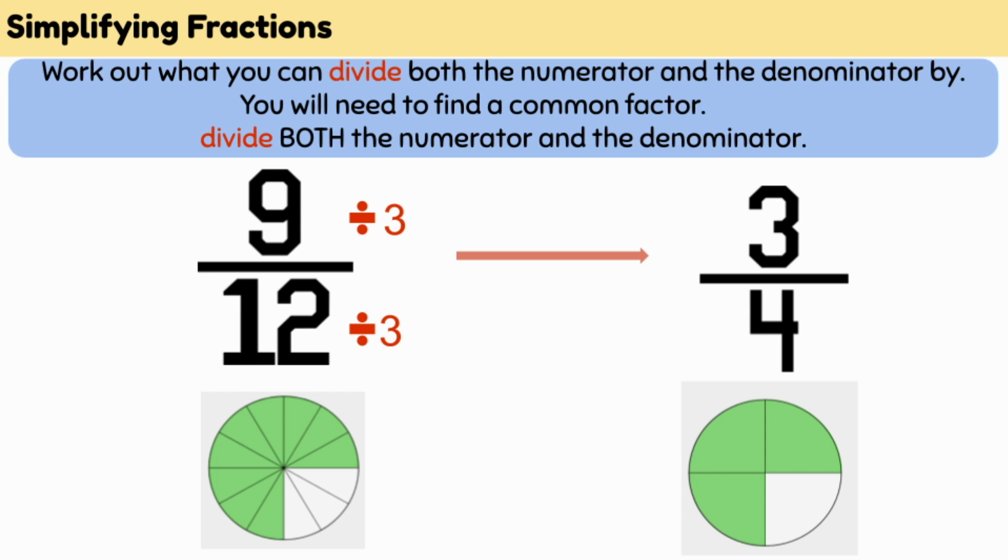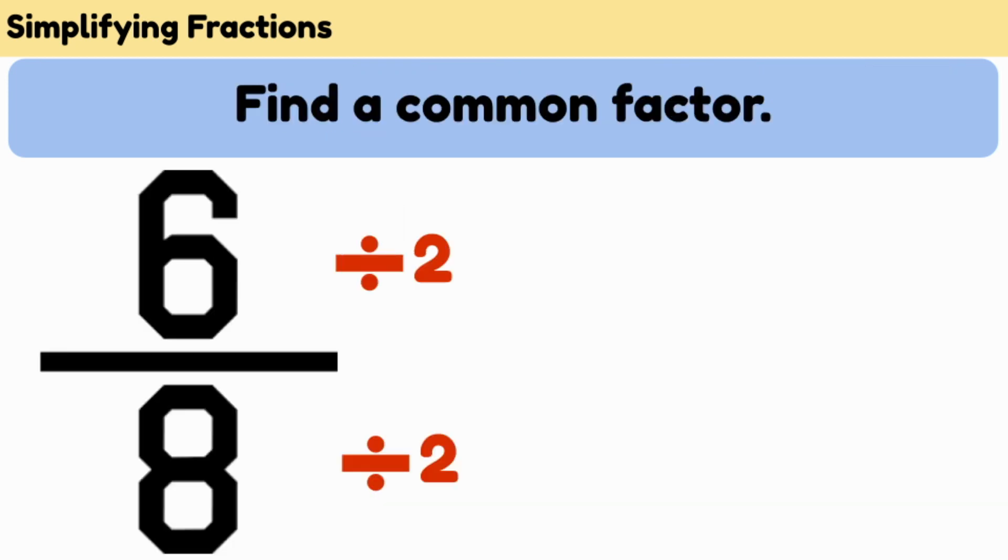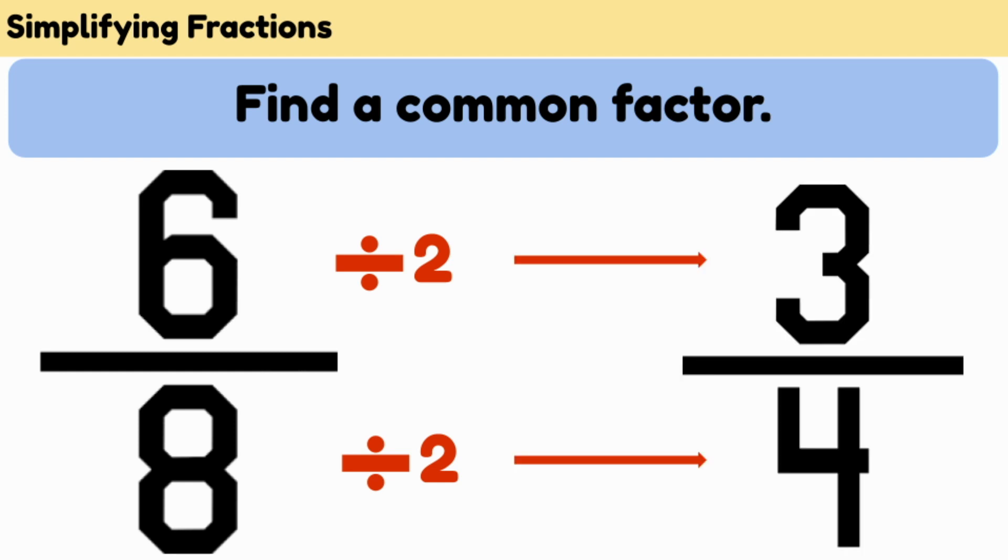I'm going to show you how to use division to make a simple equivalent fraction. To do this, you need to find a common factor that can be divided by both the numerator and the denominator. If the numerator and the denominator are both even numbers, we know that a common factor is always going to be 2.